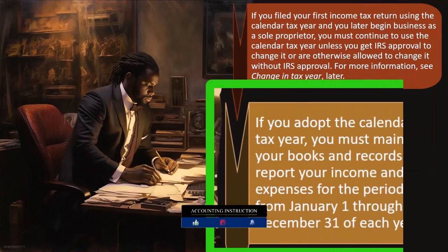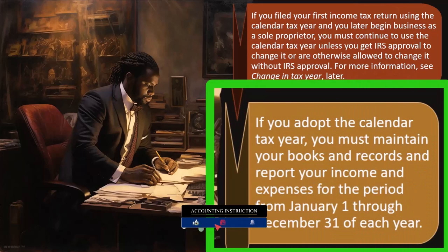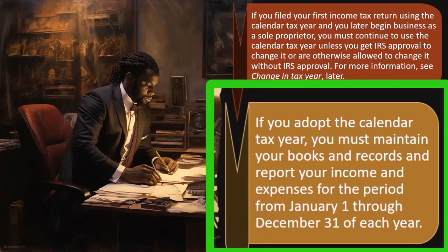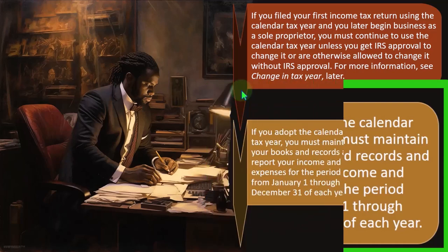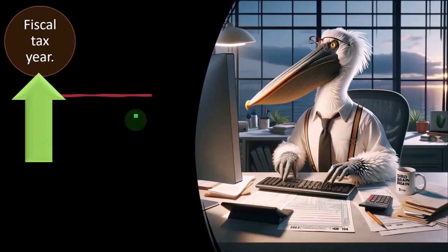If you adopt the calendar tax year, you must maintain your books and records and report your income and expenses for the period from January 1st through December 31st of each year. That's the cutoff date for reporting income in accordance with the accounting method being used — generally some kind of cash basis, accrual basis, or some in-between basis.